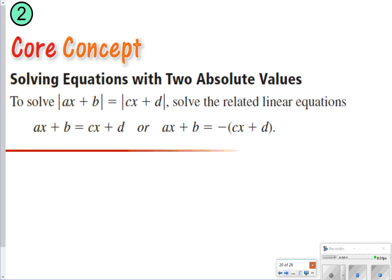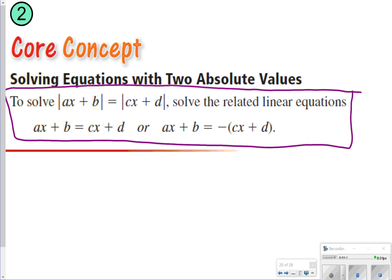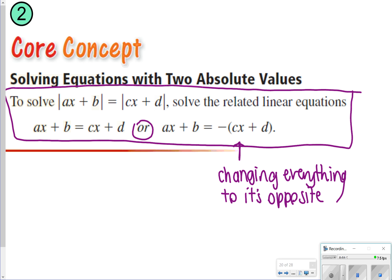What we're going to write down next is how to solve two absolute values. This would be good to copy in your notes. You're still going to write two equations, except the second equation you're just changing everything to its opposite. Go ahead and pause the video so you can write down number 2 in your notes, and once you're done, click play to see what we do next.